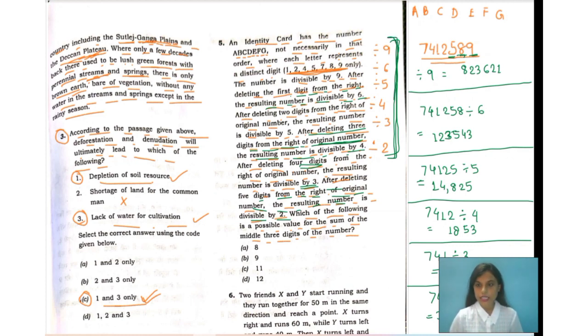Now what we need to do is find out the possible value of the sum of the middle digits of the number. According to our number, the possible value is coming to 8. You see, 1 plus 2 plus 5, so it's coming to 8. So you have this answer number 8. So A is your correct option.